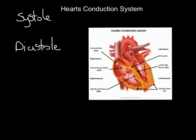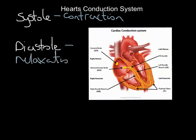Just to quickly recap a couple of key terms: systole and diastole. Systole is the contraction phase of the heart, and diastole is the relaxation phase. So when the cardiac tissue contracts, it's known as systole, and when it relaxes, it's known as diastole. If you re-watch the video on the cardiac cycle, you'll re-familiarise yourself with that, and it's very important to do so.